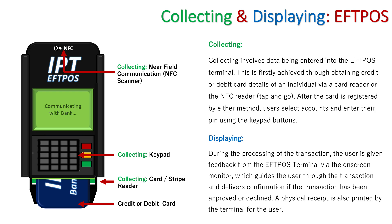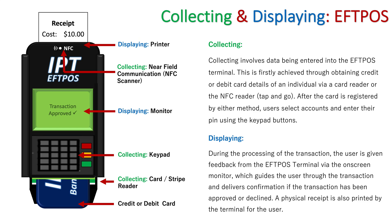Looking at the displaying components on the terminal: firstly is the monitor, which displays how the transaction is going and gives prompts — if the transaction is approved, that's shown there. The other displaying component is the printer at the top of the EFTPOS terminal. Once the transaction is approved, it prints off a receipt, which comes out of the terminal on paper and is given to the customer. Both the monitor and the printer are the displaying components of the EFTPOS terminal.